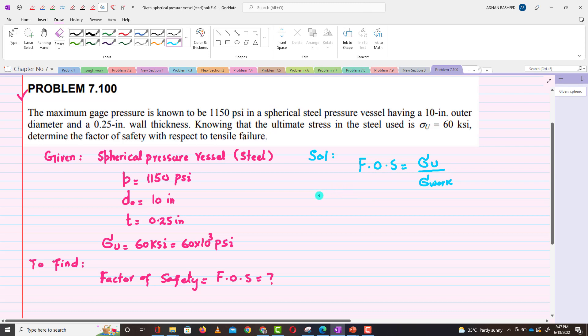Here, since it is a spherical pressure vessel, we will have σ₁ = σ₂, that will be equal to σ working, which is not known yet.